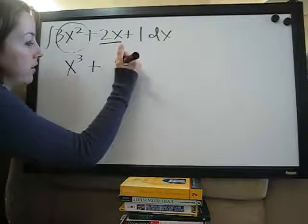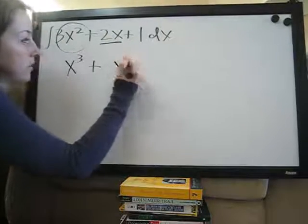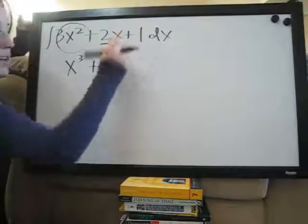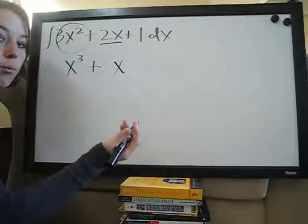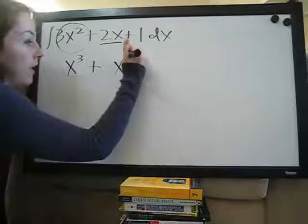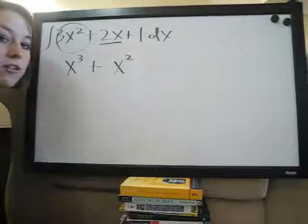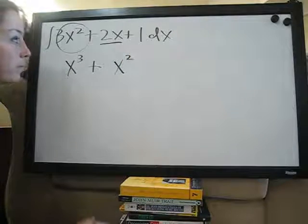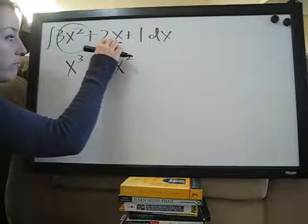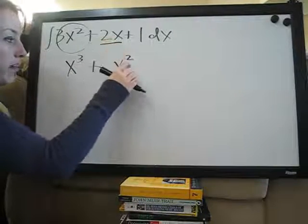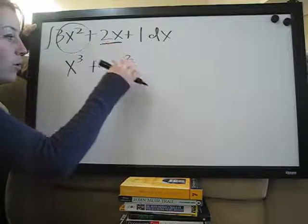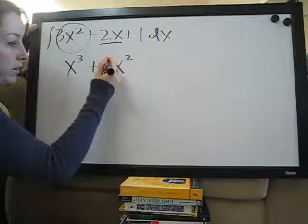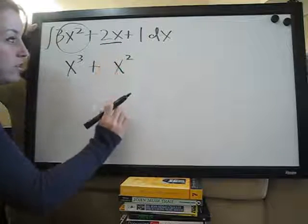For the second term, 2x: the exponent is 1, so we add 1 and the new exponent is 2. We take the coefficient and divide by the new exponent — 2 over 2 is 1 — so we don't need to write that, giving us x squared.